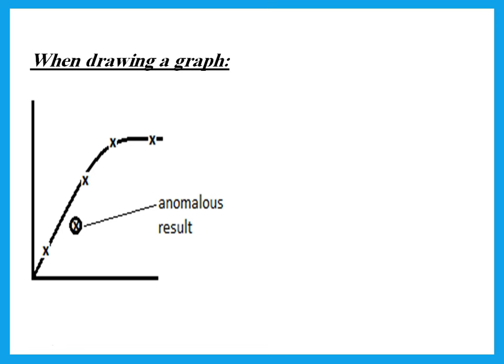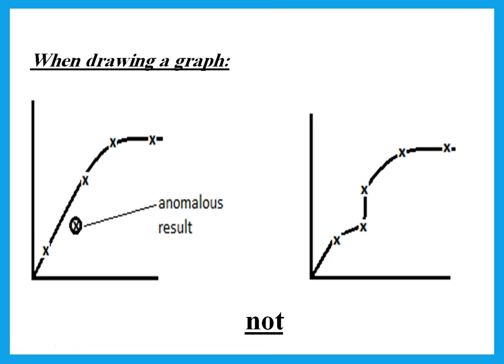When drawing a graph, plot the points using small x's. If there is a point away from the curve, that point is referred to as an anomalous result — it is a wrong reading. I should not include it in forcing the curve in and out; the graph should be a smooth curve. If a point is away from the curve, it is an anomalous result, and if asked why, say it is because it is away from the curve.